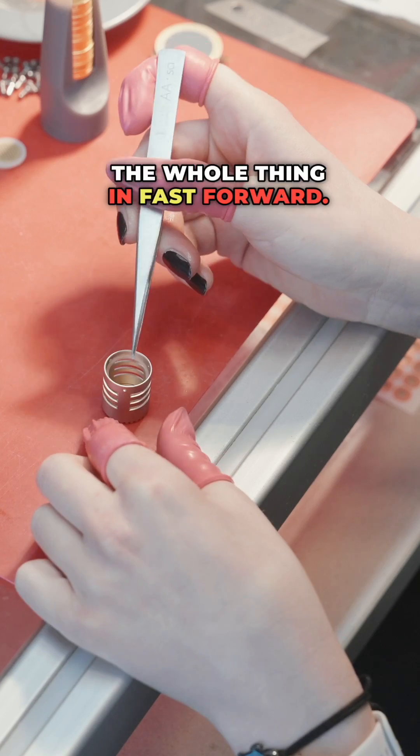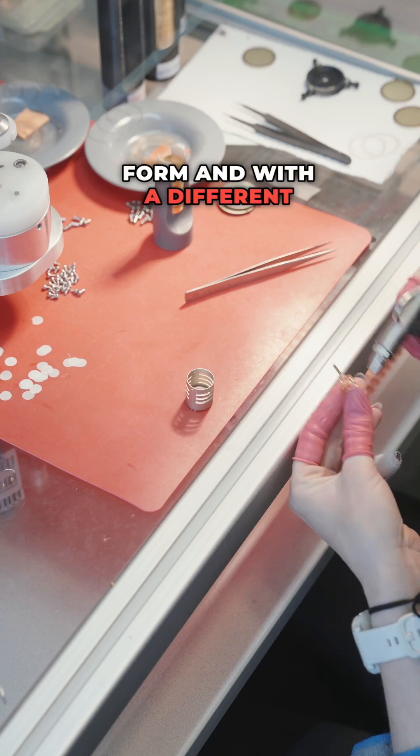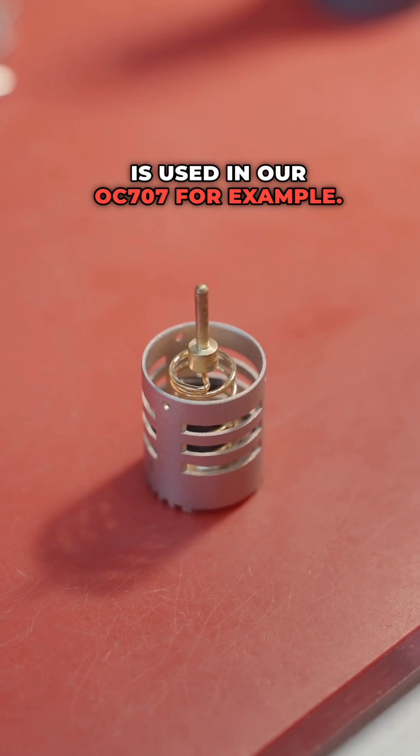Here we see Jenny assembling the whole thing in fast forward. We basically have the same components, just in a smaller form and with a different suspension. This capsule is used in our OC707 for example.